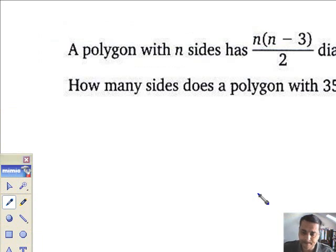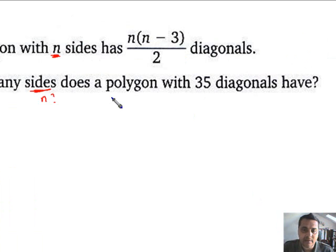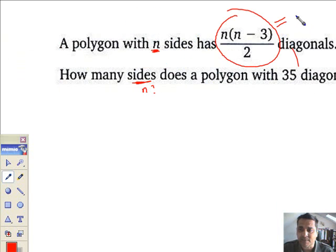It says a polygon with n number of sides has this many diagonals: n bracket n minus three close bracket all divided by two. How many sides, in other words I've got to work out the n, does a polygon with 35 diagonals have? Well, if this expression is about the number of diagonals, then this must come to 35.